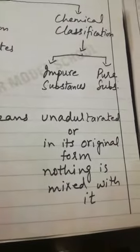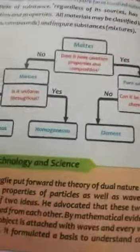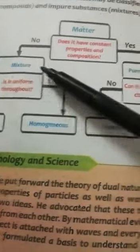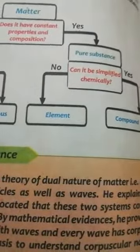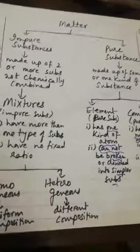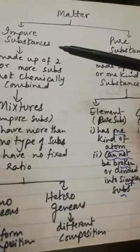We will discuss the chemical classification in detail as it is given in your course. Matter is classified into impure substances — called mixtures — and pure substances, which are further divided into elements and compounds.